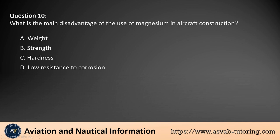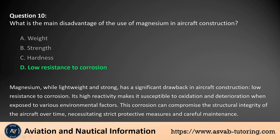Question 10. What is the main disadvantage of the use of magnesium in aircraft construction? The answer is D. Magnesium, while lightweight and strong, has a significant drawback in aircraft construction: low resistance to corrosion. Its high reactivity makes it susceptible to oxidation and deterioration when exposed to various environmental factors. This corrosion can compromise the structural integrity of the aircraft over time, necessitating strict protective measures and careful maintenance.